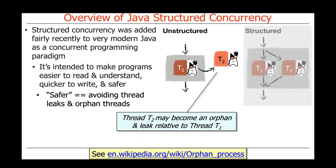What does safer mean in this context? Safer means that we try to avoid so-called thread leaks and orphan threads. In the traditional unstructured way of doing Java threading, thread T2, if spawned by thread T1, could become an orphan if thread T1 finishes before thread T2 completes. That can cause issues where threads run amok and do things that exceed the scope in which they were created.